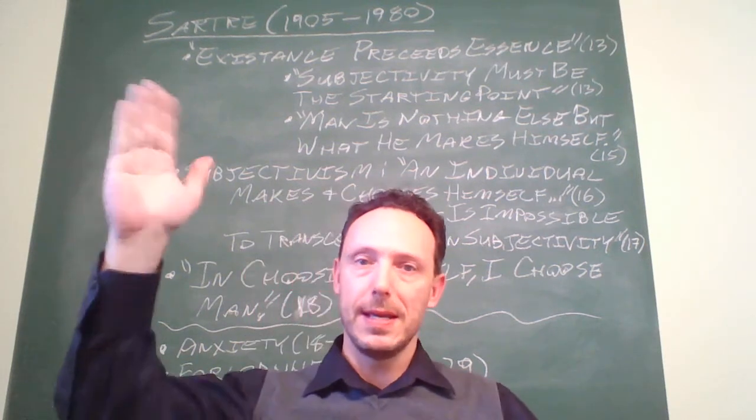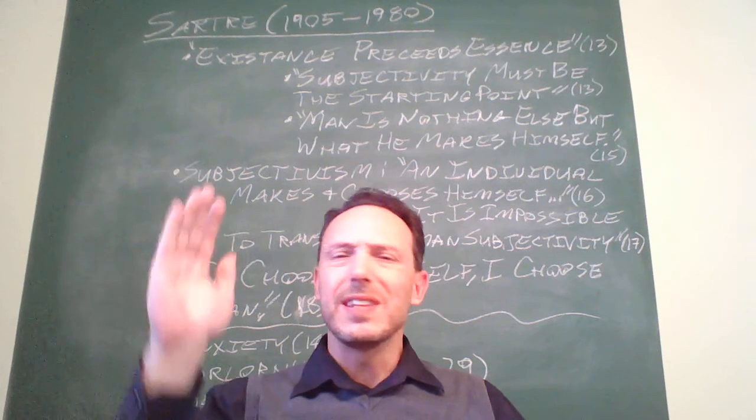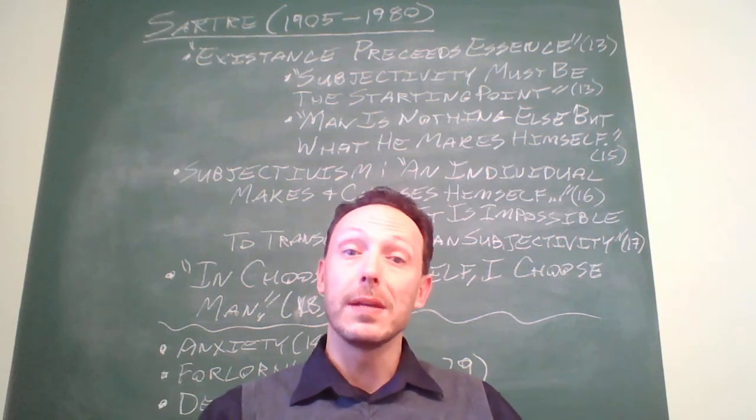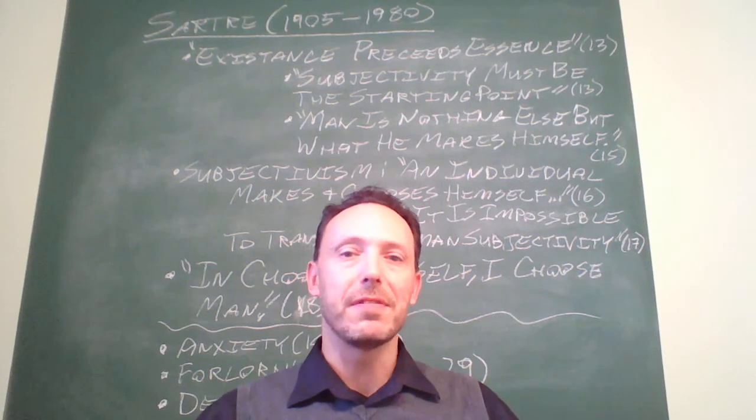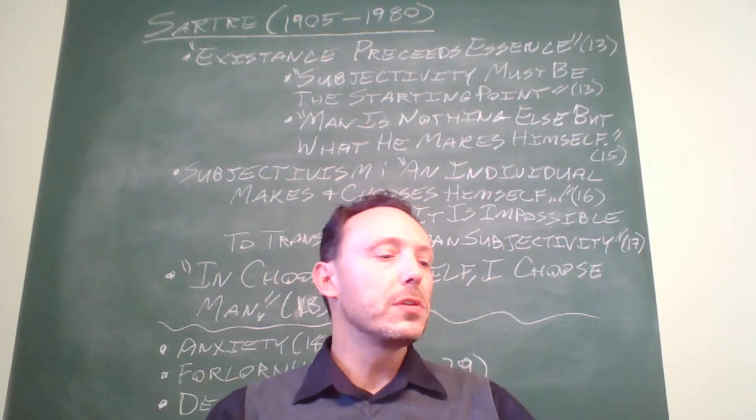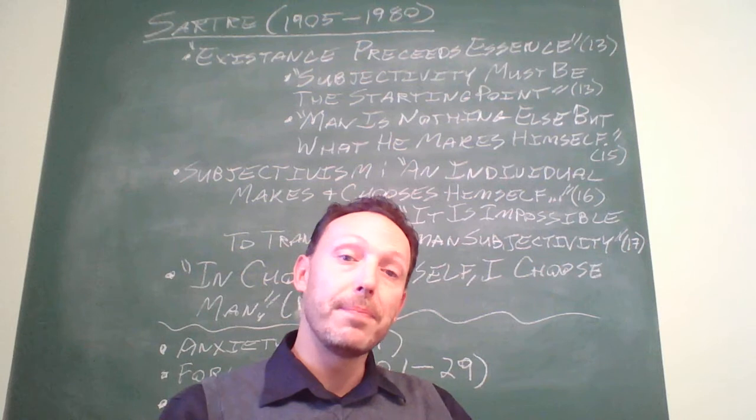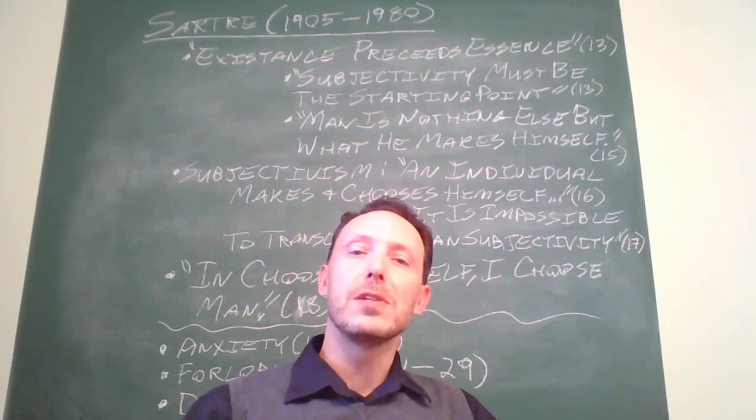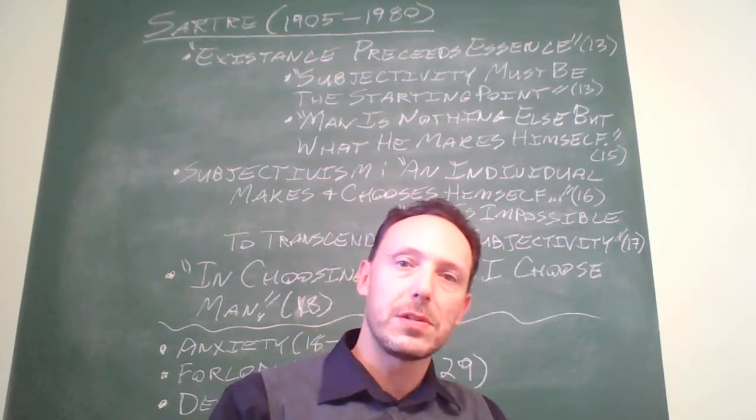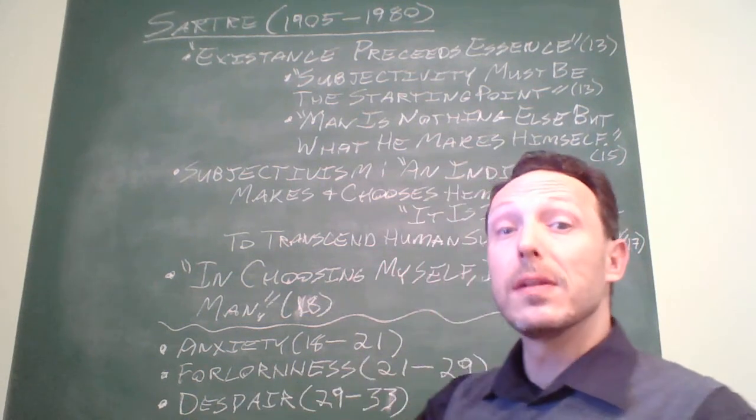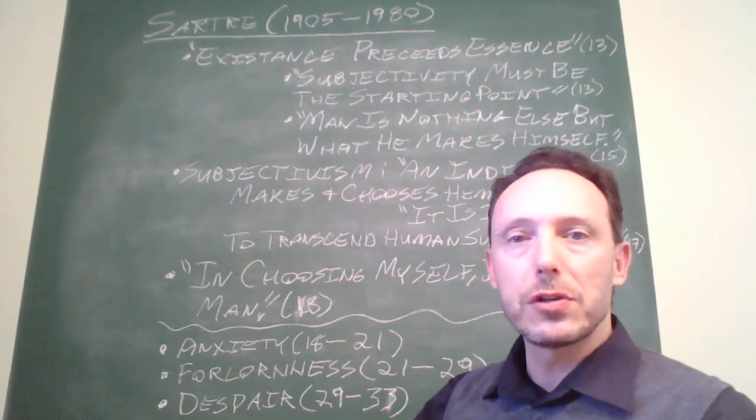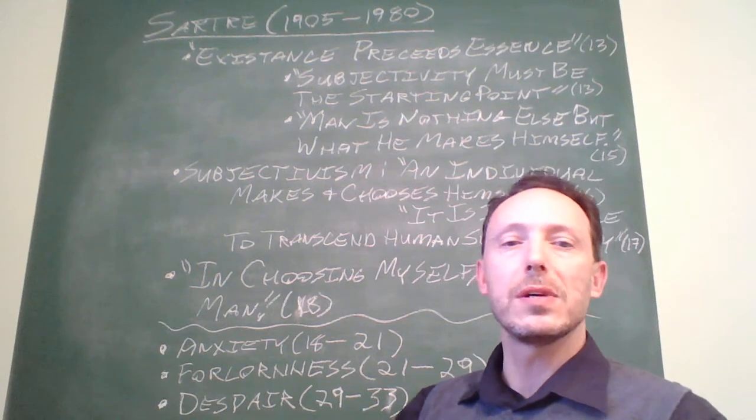who start with a description of the essence of human beings. A human being is an essence or a definition, and particular human beings are just particular examples of that definition. Existentialism, on the other hand, holds that existence precedes essence, or first we exist, and then through our choices, through our actions, and through the exercise of our freedom, then we define ourselves.